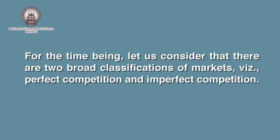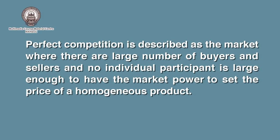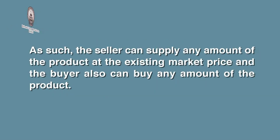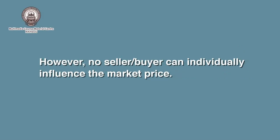For the time being, let us consider two broad classifications of markets, namely perfect competition and imperfect competition. Perfect competition is described as the market where there are a large number of buyers and sellers, and no individual participant is large enough to have the market power to set the price of a homogenous product. As such, the seller can supply any amount of the product at the existing market price, and the buyer also can buy any amount. However, no seller or buyer can individually influence the market price.